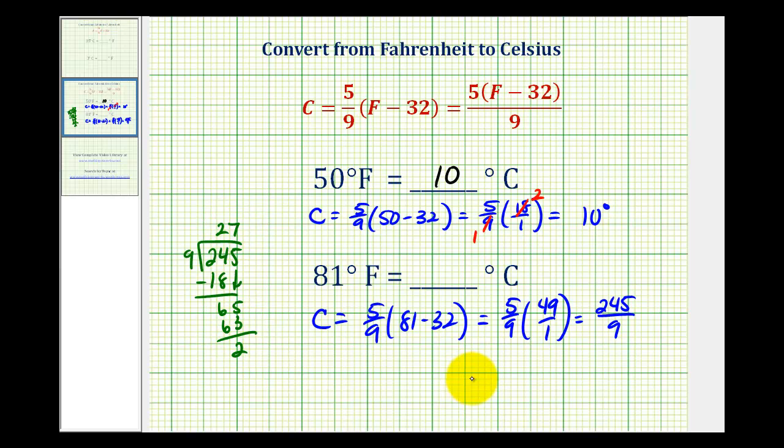So if we stopped here, this would be equal to 27 and two ninths degrees. But you normally don't see temperature expressed as a mixed number. So let's convert this to a decimal.